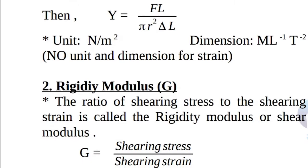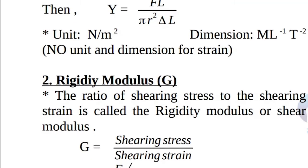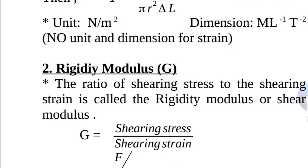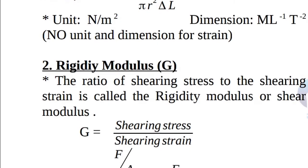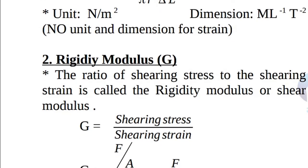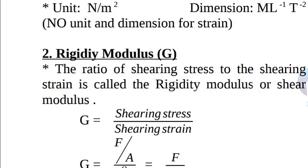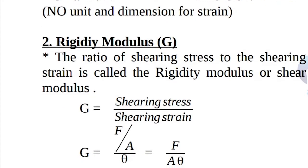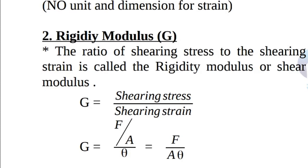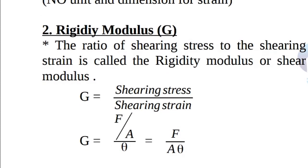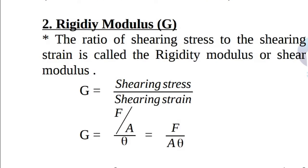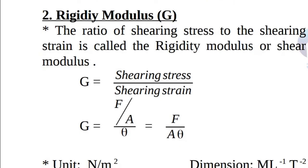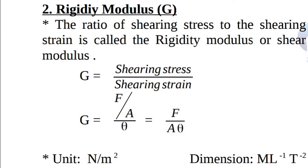Rigidity modulus G is the ratio of shearing stress to shearing strain. It is also called shear modulus. G = (F/A) / θ = F / (A·θ). Its unit is also N per meter square and its dimension is M L⁻¹ T⁻². For most materials, G is of the order of Y/3.